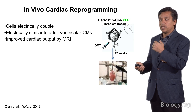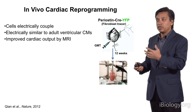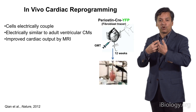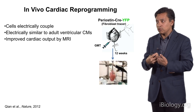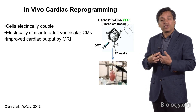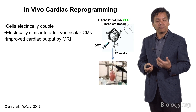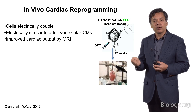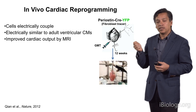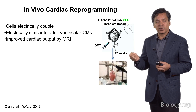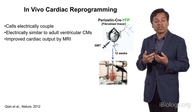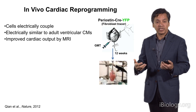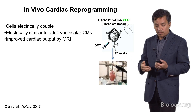It turns out that we can not only do this, we can do this in a way that the new myocytes formed electrically couple with their neighbors, they're most similar to an adult ventricular cardiomyocyte, and most importantly we were able to show that these new myocytes are sufficient to actually improve cardiac output in these mice after damage, measured by MRI.